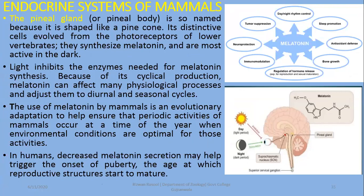We call these biorhythms — diurnal rhythms especially — and they are considered to be regulated by melatonin. By regulating melatonin and these rhythms, other body functions are also regulated. The use of melatonin by mammals is an evolutionary adaptation to help ensure that periodic activities occur at the time of year when environmental conditions are optimal — for example, reproductive activities.